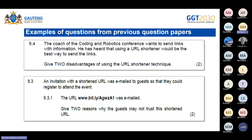In this case, because guests are receiving an emailed link to register for an event, you could mention: there is no indication whether the website is secure, since the shortened URL doesn't reveal anything about the real website. It can be flagged as spam in the recipient's inbox. There is no logical indication of the actual website in the shortened URL. Those would be your two reasons why people would not trust this link.